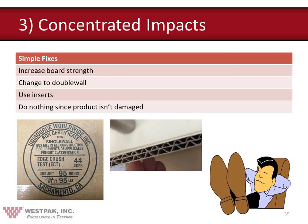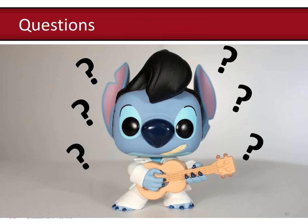Other simple fixes for concentrated impact failures include increasing the board strength, changing to double wall, using corrugated inserts, or doing nothing if the product is not damaged in the field.